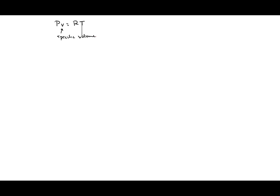The specific volume means volume per mass. So the little v means that it's a specific volume. And this R is the gas constant, and this R is different for different gases.